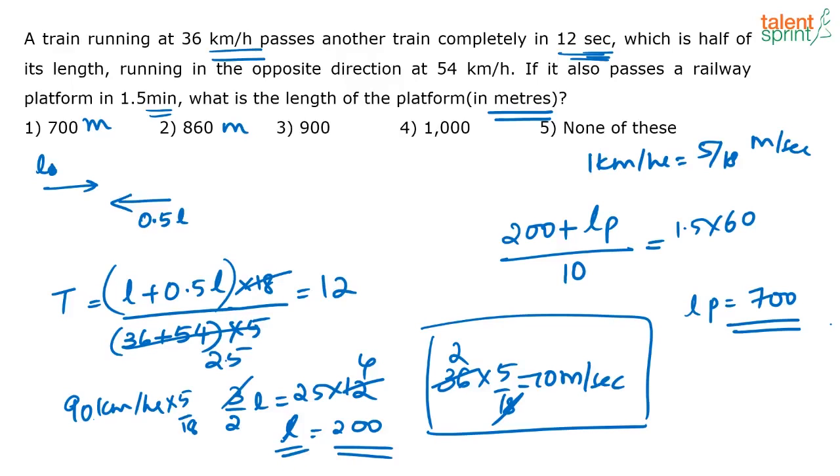Now, once I get the length of the train, just put it in the equation here. 200, that is the length of the train plus the length of the platform divided by the speed of the train should give us the time the train takes to cross the platform. From that, find out the length of the platform.